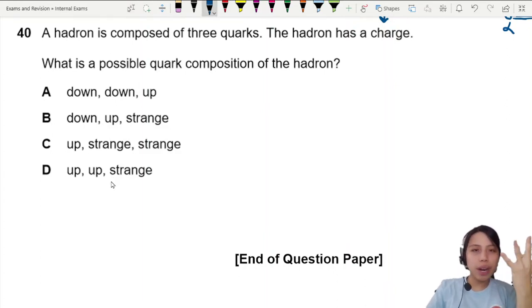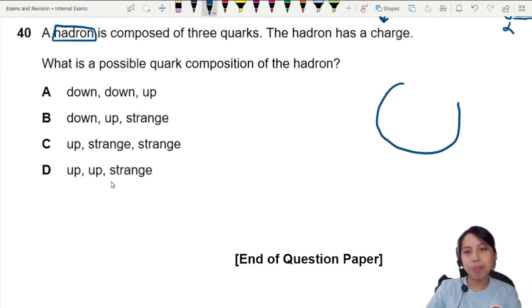A hadron is composed of three quarks. A hadron generally we call a type of big particle that has three quarks inside of it.